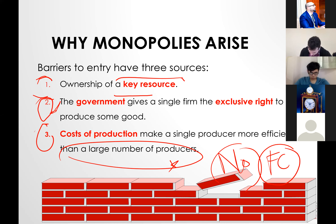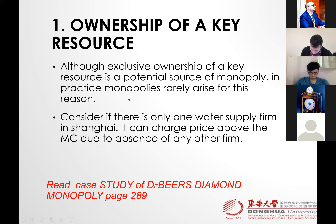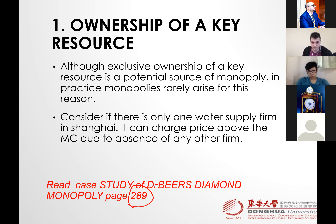So number one is ownership of key resources — already explained. There is a case study on page 289 called De Beers Diamonds Monopoly — you can look at that for your curiosity.